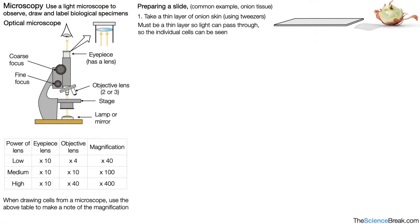This layer must be thin so that light can pass through. This is so that the individual cells can be seen. If it was too thick, light would not be able to pass through and we would very unlikely be able to see individual cells.